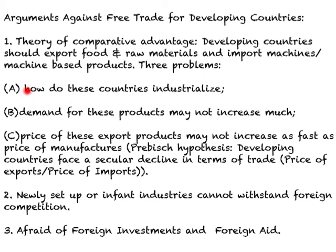There are three problems with applying the theory of comparative advantage to developing countries. First, how will these countries industrialize if comparative advantage keeps them in food and raw materials? Second, when exporting food and raw materials, the demand for these products may not increase much, because these goods are necessities and demand for necessities does not rise by much when incomes increase. So in the medium to long term, demand for developing country exports may not increase significantly. The third argument is based on a hypothesis by economist Raúl Prebisch, who found that developing countries face a secular decline in terms of trade.